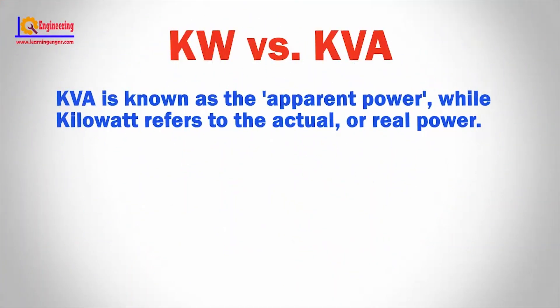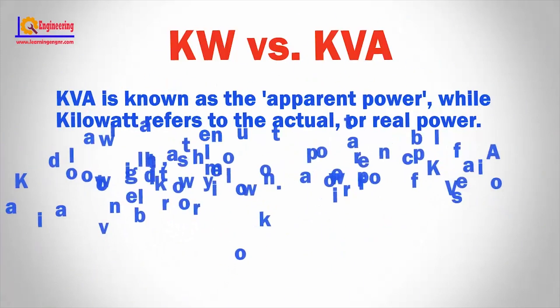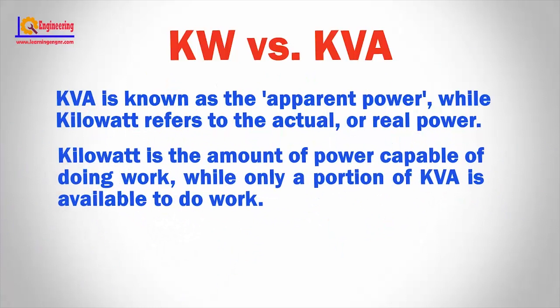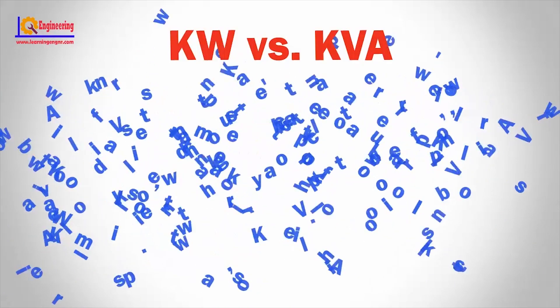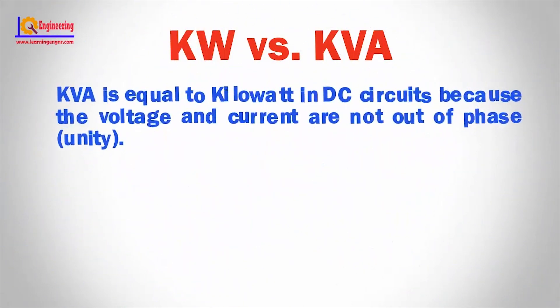KVA is known as the apparent power, while kilowatt refers to the actual or real power. Kilowatt is the amount of power capable of doing work, while only a portion of KVA is available to do work. Kilowatt is expressed as kW, while KVA is kilovolt amperes. KVA is equal to kilowatt in DC circuits because the voltage and current are not out of phase.